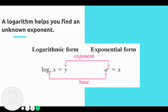What we have here is that a logarithm helps you find an unknown exponent. We can think about exponents having two different forms: the exponential form and the logarithmic form. In the exponential form, we have a to the y equals x, where a is our base and y is the exponent. When we write it in log form, we have log base a of x equals y, or the exponent.